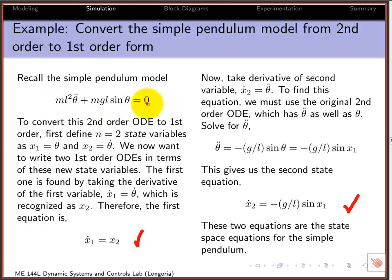In the pendulum, you're going to start off with an nth order equation, and you want to convert that into two first order equations. It depends on the order of your system. In this case, it's second order, so we're going to define two new state variables. The first one will be theta itself.